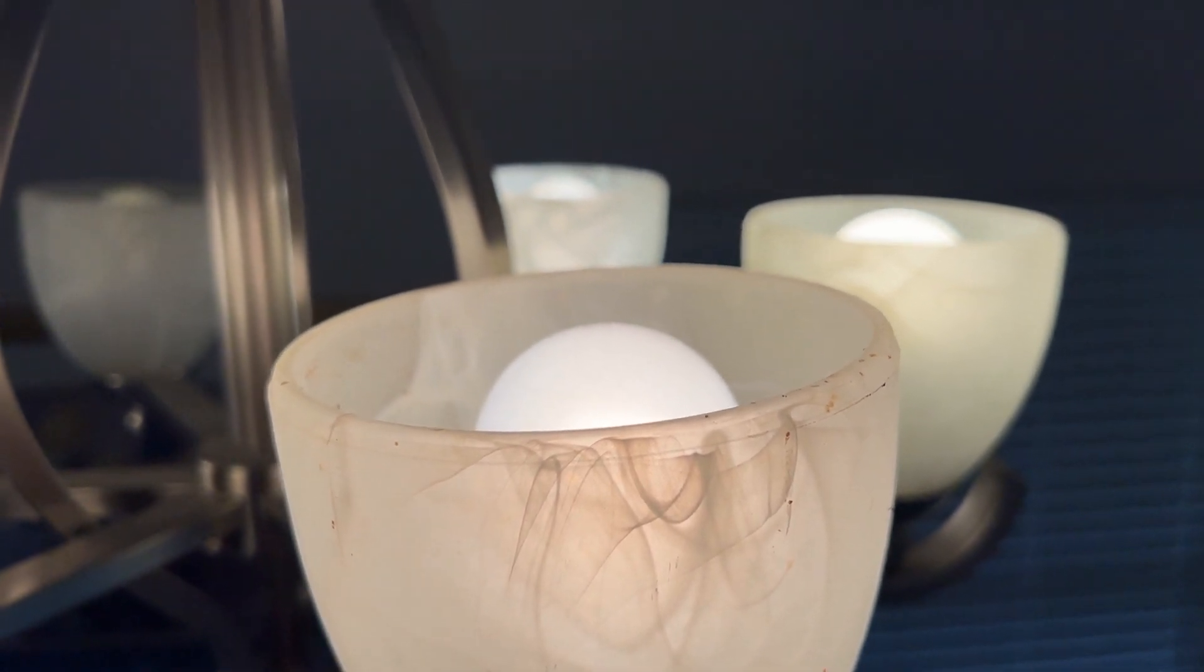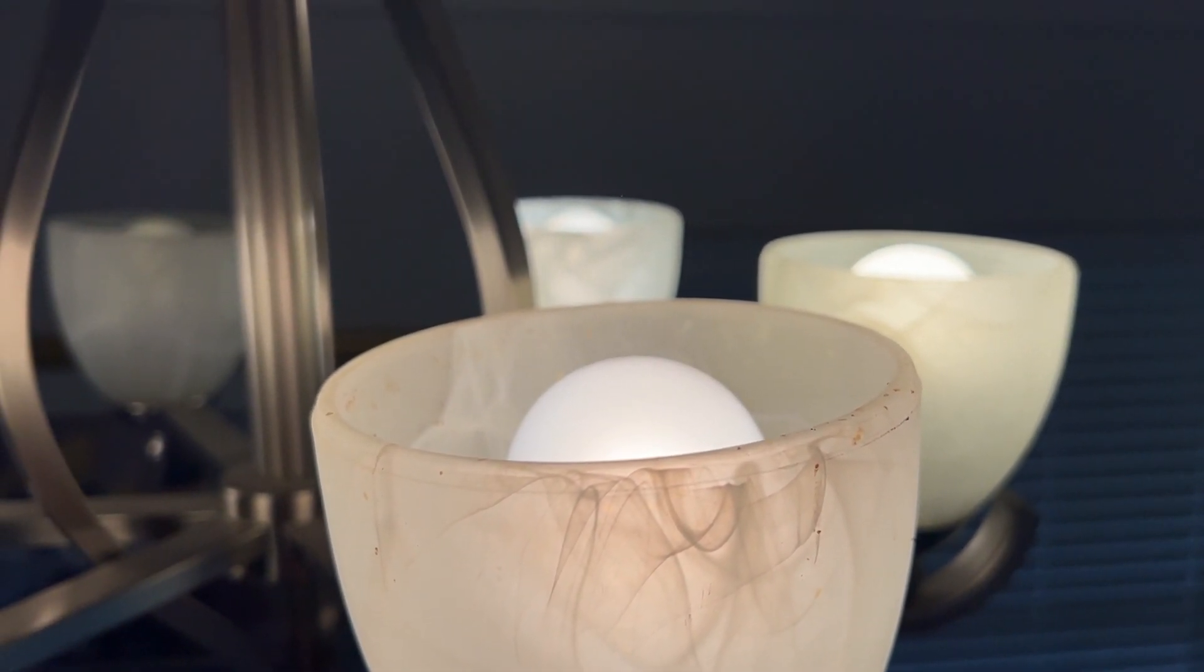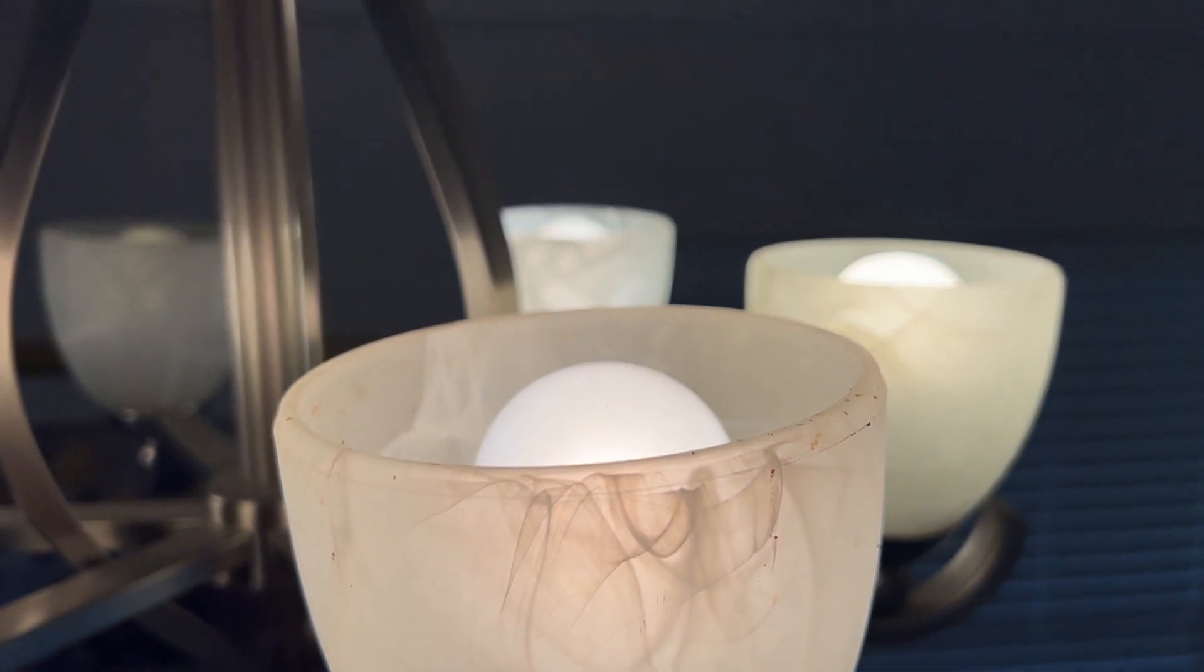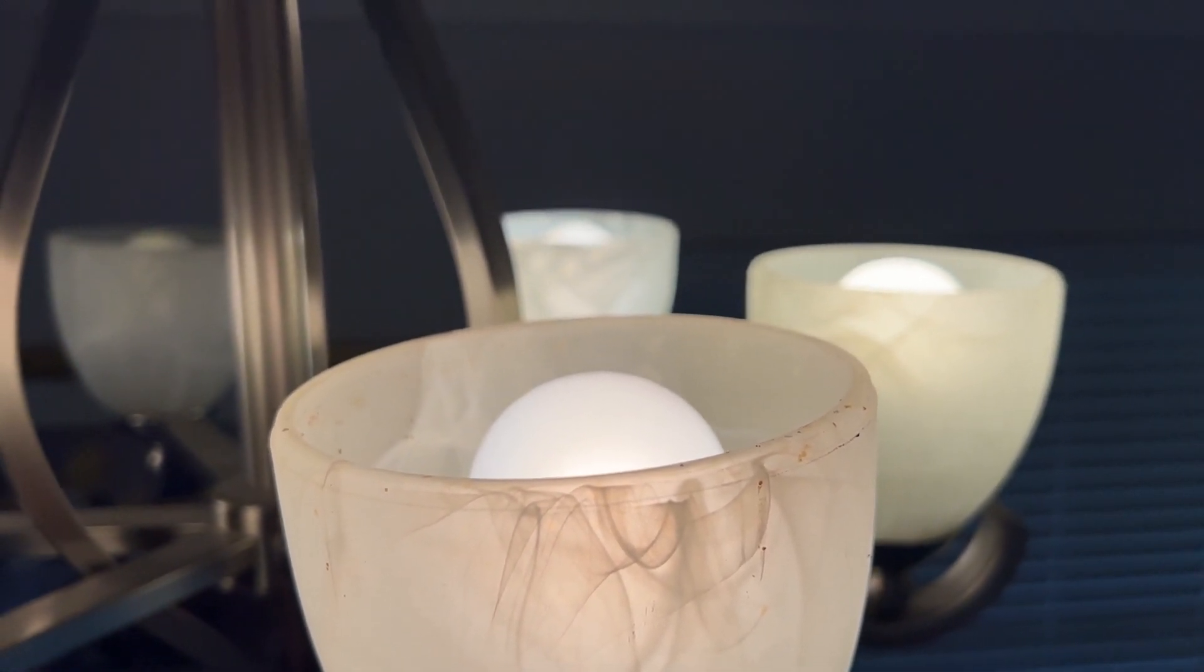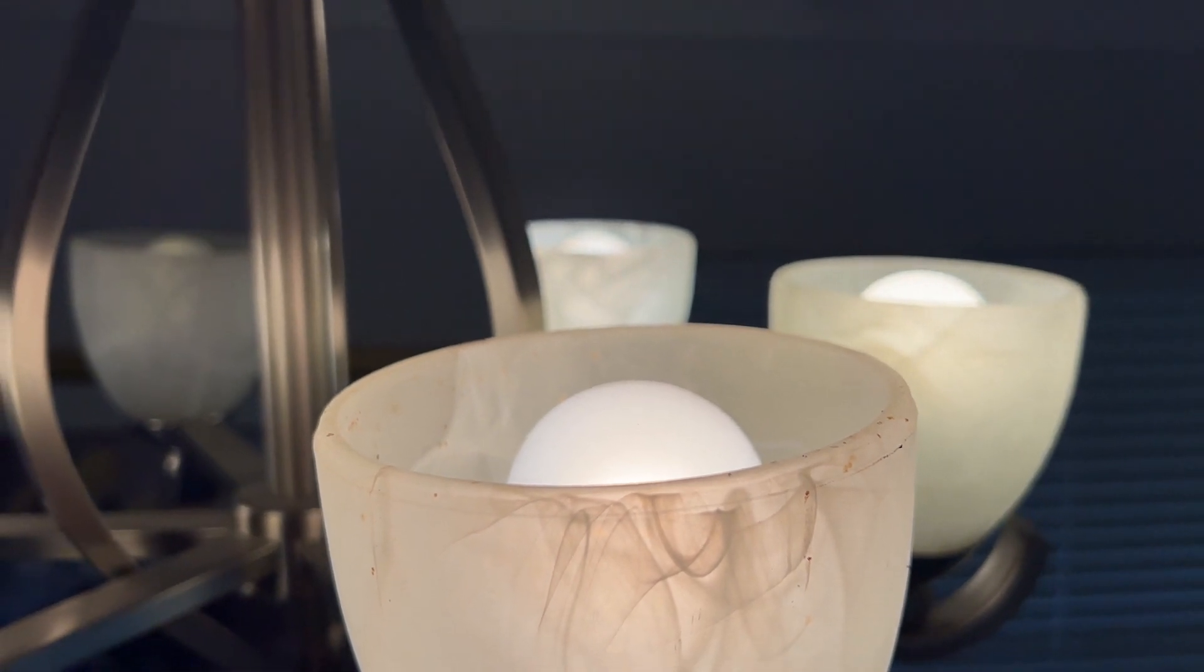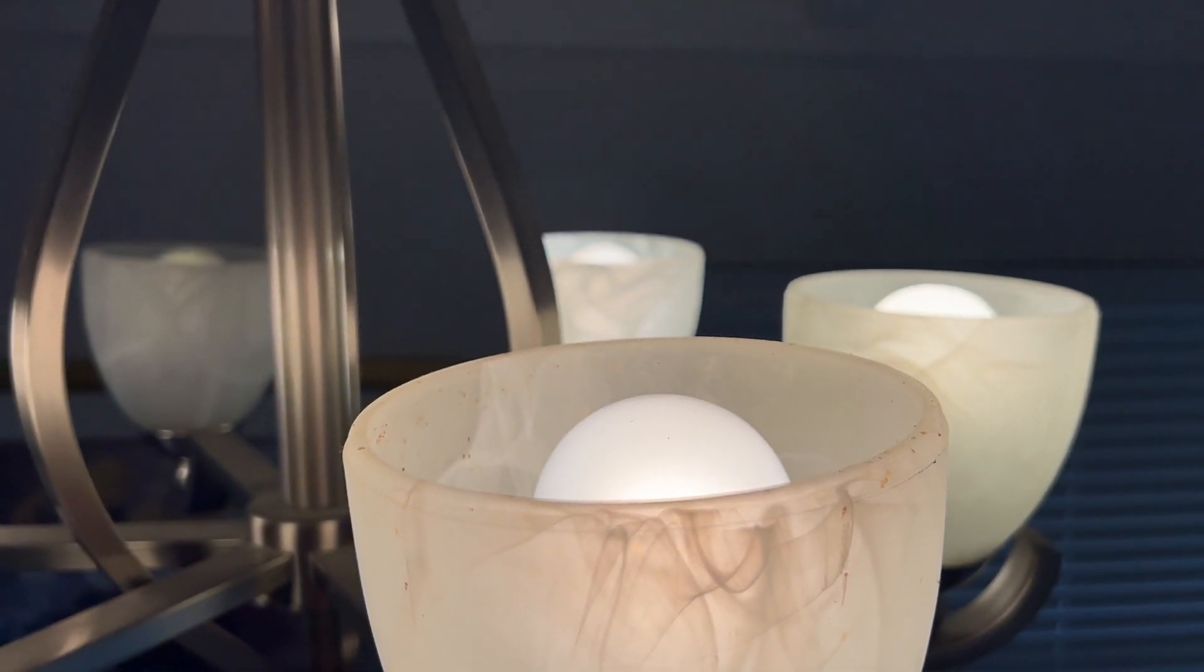A traditional incandescent puts out about 1600 lumens. That's a measure of the amount of light. The equivalent from an LED is a 12 to 14 watt LED bulb.